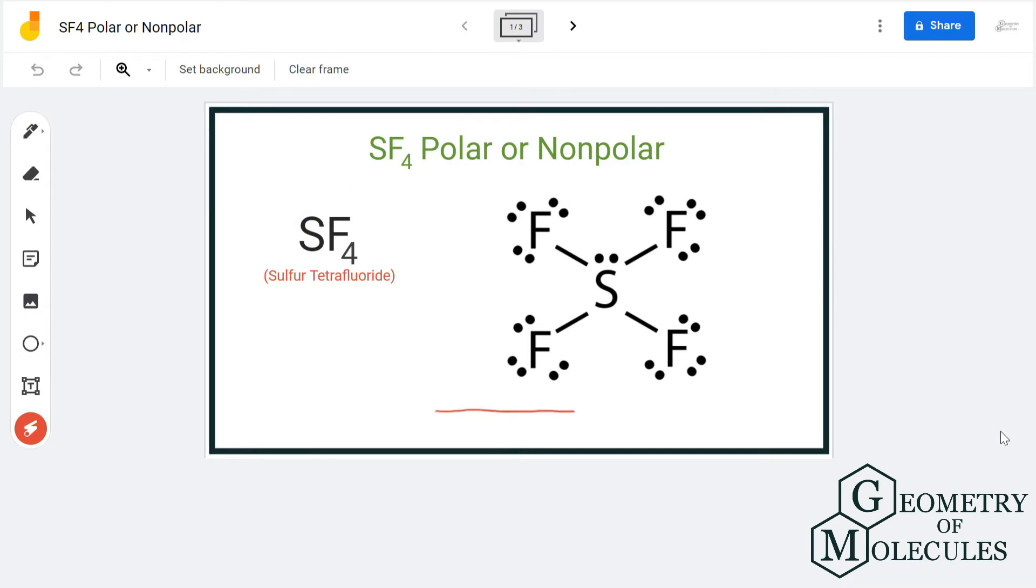So to understand its polarity, we will first look at its Lewis structure, followed by the shape of this molecule to understand if there is a formation of any poles. When we look at its Lewis structure, we see that sulfur atom is in the center because it is the least electronegative atom as compared to fluorine atoms.